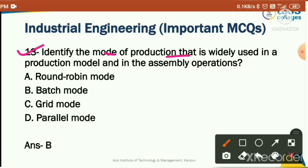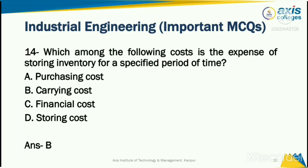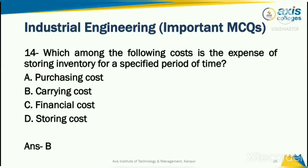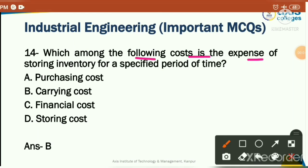Identify the mode of production that is widely used in a production model and in assembly operations. Options: round robin method, batch mode method, grid mode, or parallel mode. The correct answer is batch mode — batch mode production is widely used.